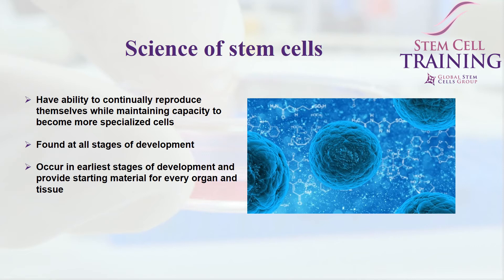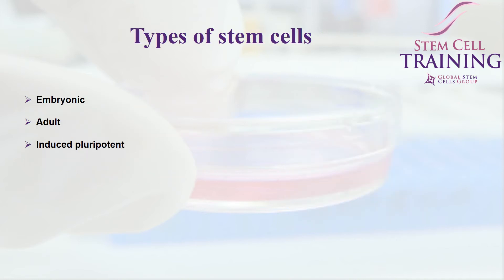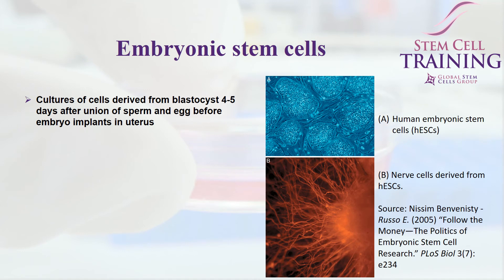Stem cells can be used to help develop science and lay a foundation for regenerative medicine. They have the potential to replace cell tissue that has been damaged or destroyed by severe illness, and understanding how stem cells develop into healthy and diseased cells will assist the search for treatment of various illnesses. There are three main types of stem cells: the embryonic, the adult, and the induced pluripotent. Embryonic stem cells are cultures derived from the blastocyst, which is four to five days after the union of the sperm and the egg, but before the embryo implants into the uterus.